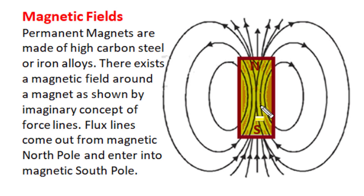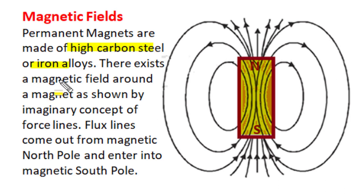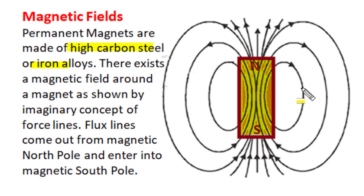Permanent magnets, which can produce and retain a strong magnetic field around them, are made of either high carbon steel, or iron-nickel alloy, or iron-nickel-cobalt alloy. There exists a magnetic field around these magnets, as shown by these imaginary magnetic force lines.